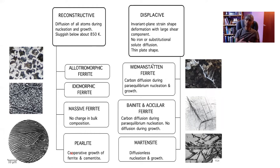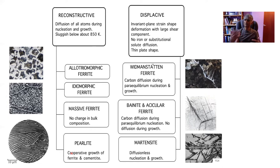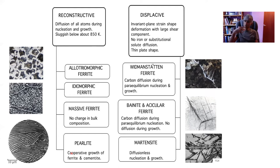Ferrite has a lower solubility for carbon when in contact with austenite than austenite itself, and cementite has a much higher solubility for carbon when in contact with austenite. So as they grow at a common front, the ferrite is partitioning carbon into the austenite and the cementite is taking back that excess carbon into its growth process. So it involves the cooperative growth of two phases.